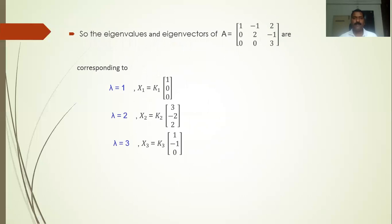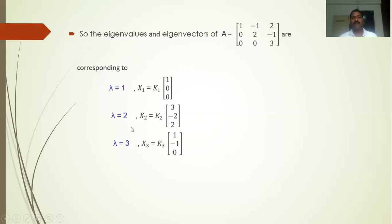To consolidate: we found the eigenvalues and eigenvectors of matrix A. Step 1 — the characteristic equation det(A minus lambda I) equal to 0 gave a cubic polynomial with three distinct roots lambda equal to 1, 2, 3. Step 2 — solving the homogeneous system for each lambda and setting k1 equal to 1, k2 equal to 1, k3 equal to 1 gives: eigenvector [1, 0, 0] for lambda equal to 1, eigenvector [1, -1, 0] for lambda equal to 2, and eigenvector [3, -2, 2] for lambda equal to 3.